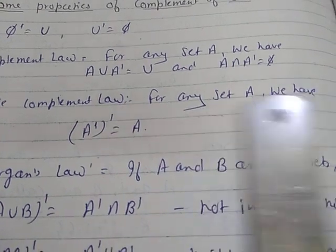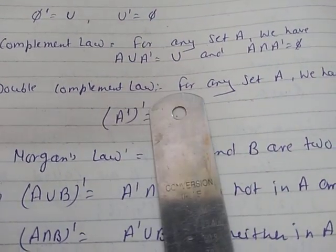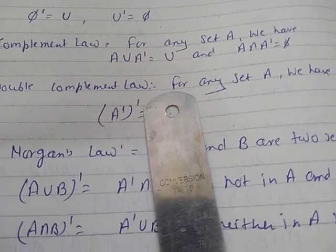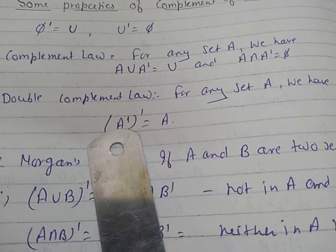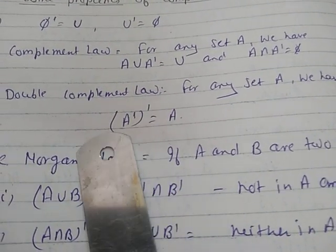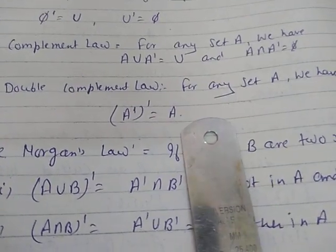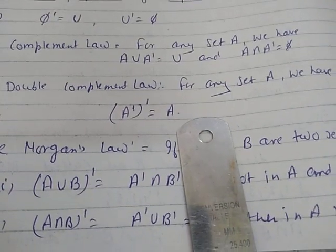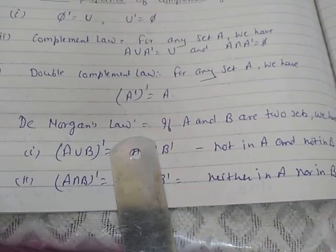Double complement law: For any set A, the complement of A complement gives you back the same set A. If you do A complement that means it is U minus A, and if you do complement again it gives you the same set. This is a most important property — you can also use it in probability.